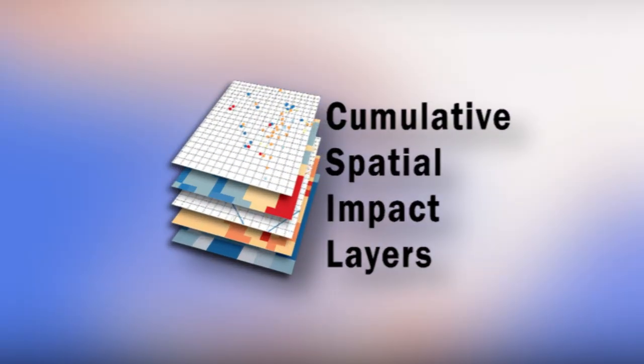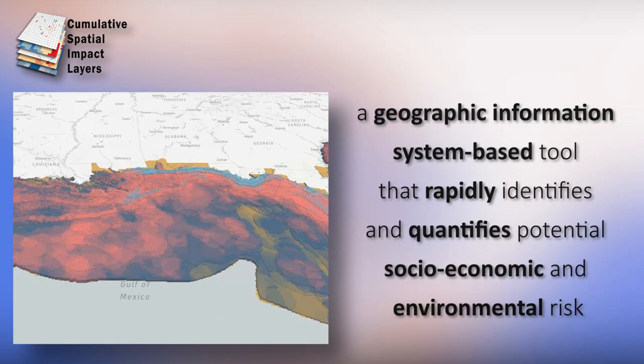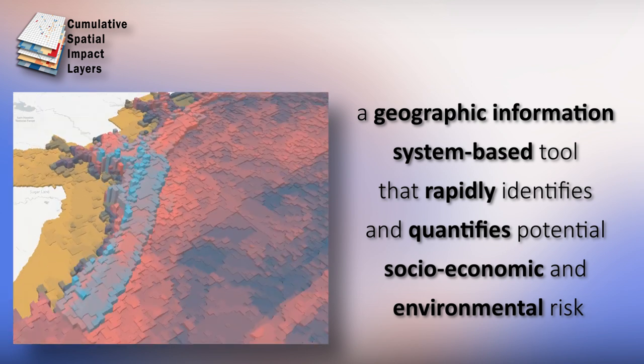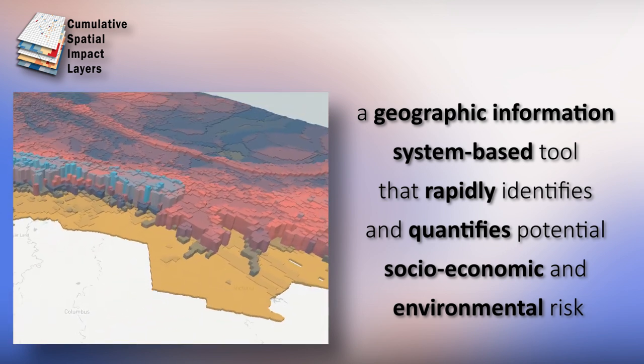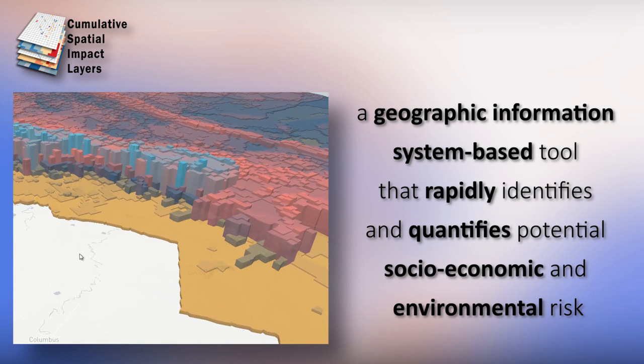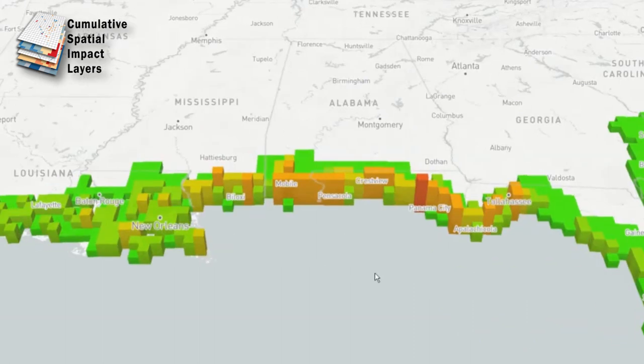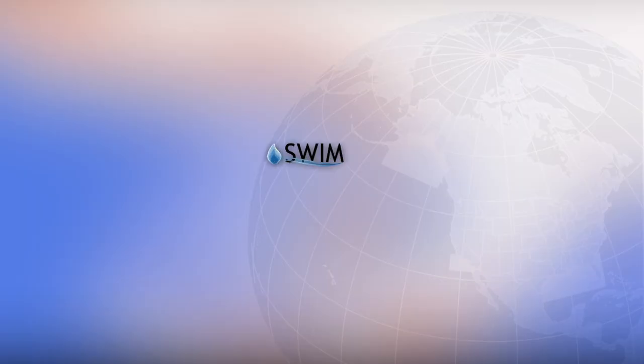Cumulative Spatial Impact Layers is a geographic information system-based tool that rapidly identifies and quantifies potential socioeconomic and environmental risk. It takes the oil spill information, the potential impacts, and can also incorporate response equipment and response availability, summarizing it all together and presenting a full picture as a layer on a map.